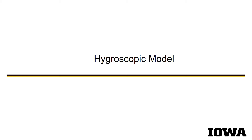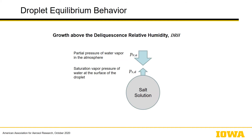The other part of our motivation is understanding how the water activity model affects the overall accuracy. Briefly, the model describes a scenario whereby above a certain humidity threshold called the deliquescence relative humidity, the partial pressure of water vapor in the atmosphere is greater than that exerted by a salt solution. Therefore water will entrain onto the droplet and it will grow until those two vapor pressures equilibrate.